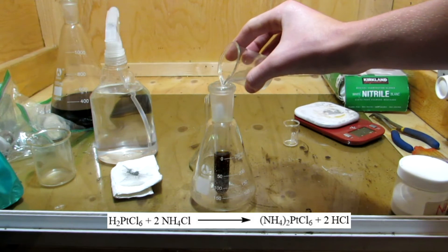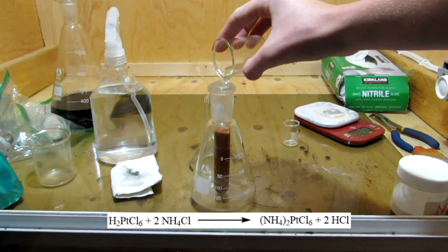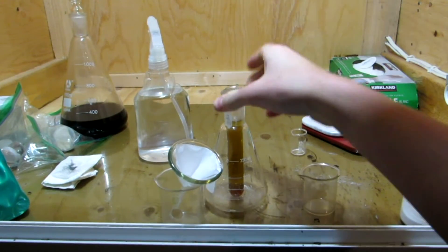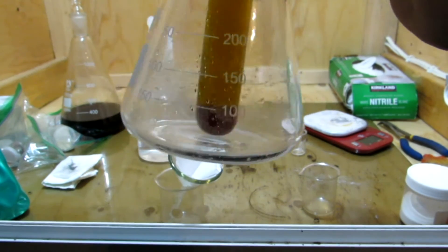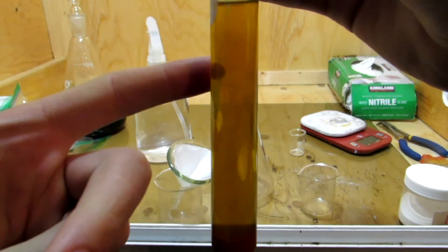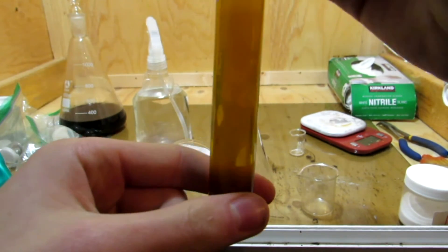Adding the ammonium chloride solution to the hexachloroplatinic acid precipitates out insoluble ammonium hexachloroplatinate. After stirring the solution and leaving it to sit, the ammonium hexachloroplatinate settled to the bottom of the test tube. The yellow color of the solution is due to a small amount of ammonium hexachloroplatinate dissolving in the above liquid.